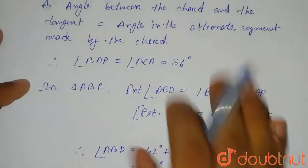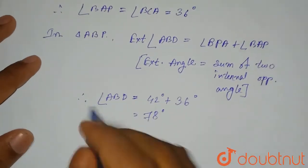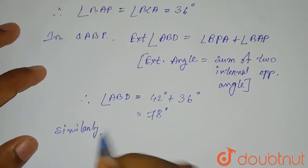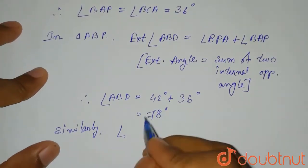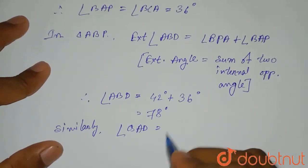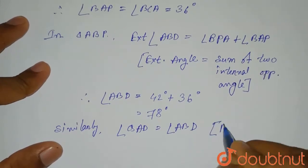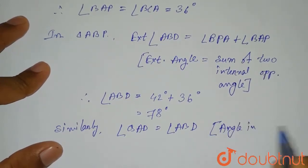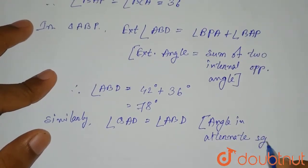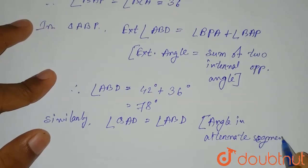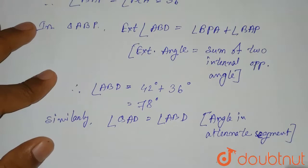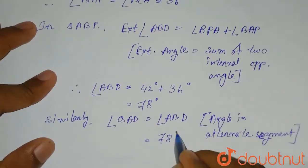Similarly, we can write that angle QAD will be equal to angle ABD, because it is the angle in the alternate segment. So as it is the angle in the alternate segment, the value of angle QAD equals the value of ABD, which is 78 degrees.